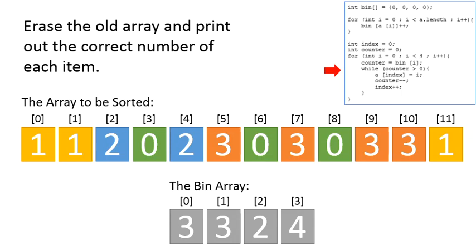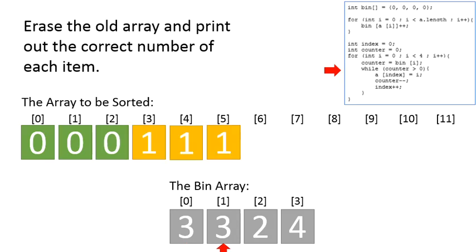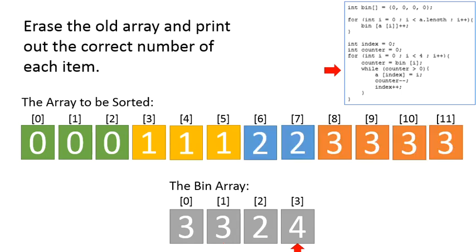So now what's going to happen is we are going to erase the array. That's radically different than what we were doing before, so it is gone. And now we're going to use that bin array to help us rebuild the array from the ground up. So it says we need three zeros, so we're going to put three zeros in the array. Then it says we need three ones, then two twos, and then four threes.